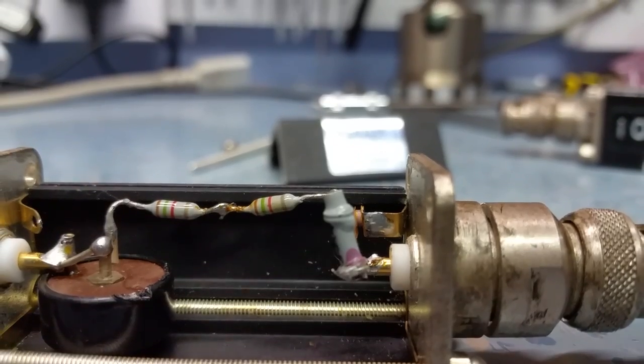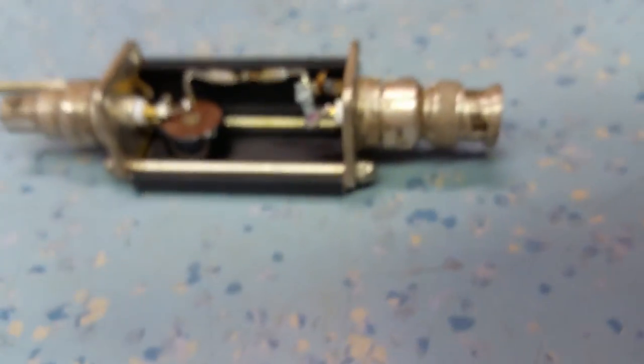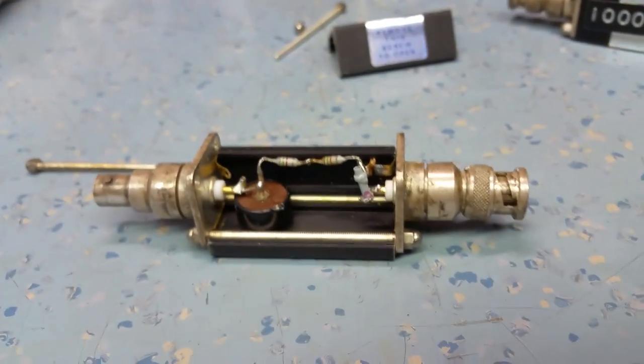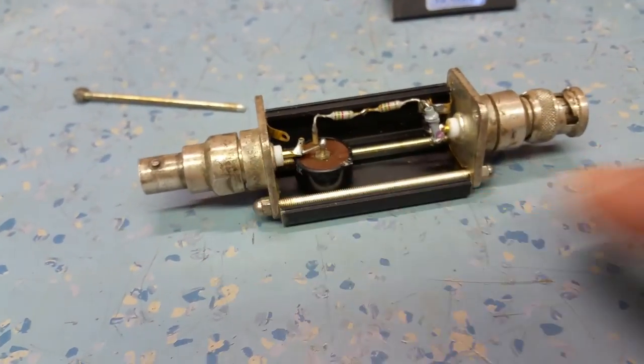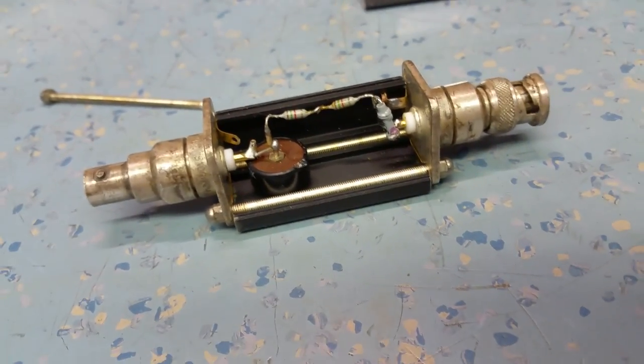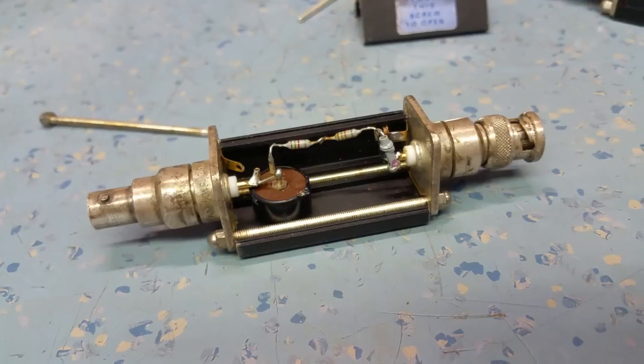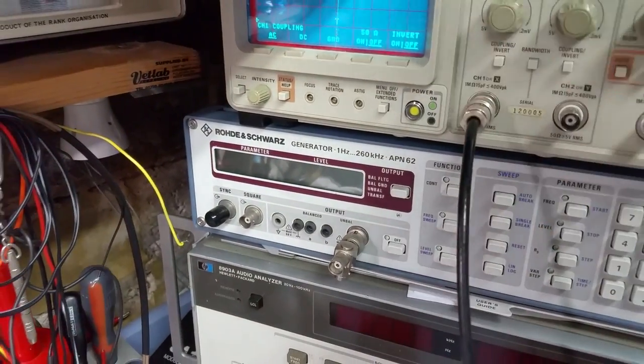So, what the idea of this is, is you feed in a ramp signal into the input of this thing. And your output goes to your scope. And then it will give you a very fast rise time. So, first of all, I'll demonstrate on the Tektronix that we've just replaced the battery on.